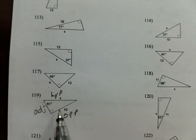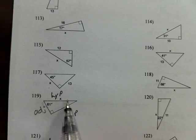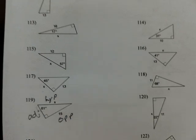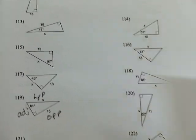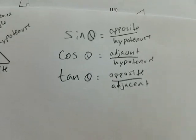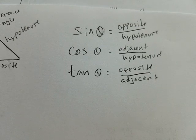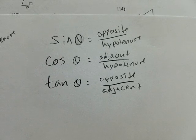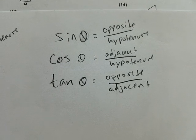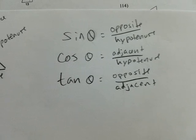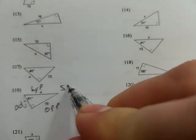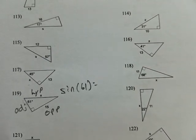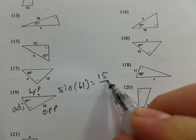If we have this angle, we have this side as given, and we're finding that side, we're dealing with opposite and hypotenuse. So we look back at our trig functions. Opposite and hypotenuse is sine. So sine of some angle is equal to opposite over hypotenuse. So sine of 61 equals 15 over X.